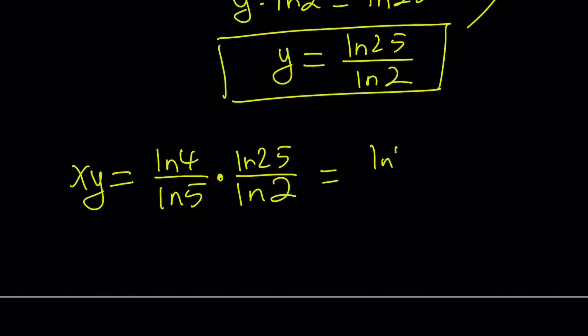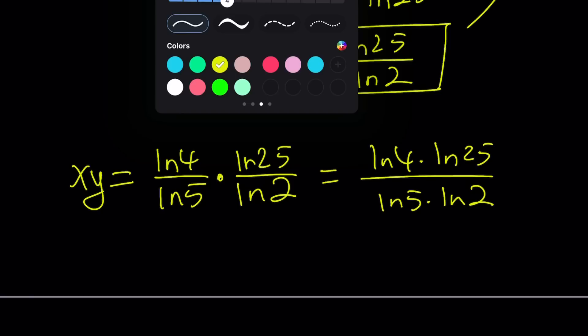But is that it? So is this the answer? ln 4 times ln 25 divided by ln 5 times ln 2. If you didn't know anything about logarithms, you would probably leave it like that. But there is a way to simplify this. So let's go ahead and simplify this expression.